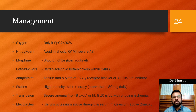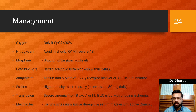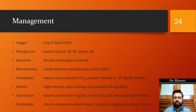Transfusion criteria in MI: if significant anemia is worsening the patient's presentation, transfuse. Hemoglobin less than 8 requires transfusion; hemoglobin 8–10 with ongoing ischemia may also warrant transfusion. Before transfusing, assess LV function to ensure fluid overload will not occur. Electrolyte correction: correct potassium if less than 3.5 mEq/L and magnesium if less than 1.8 mg/dL, to prevent arrhythmias.